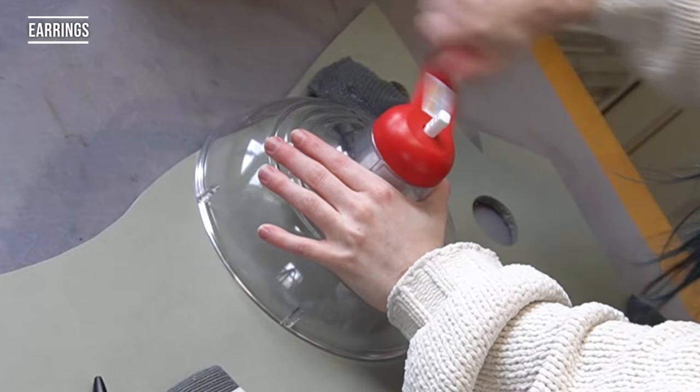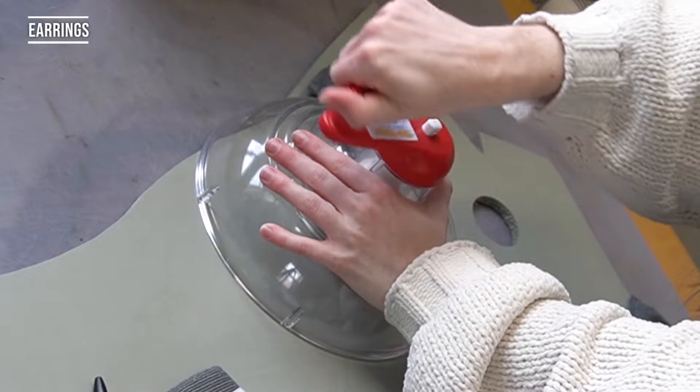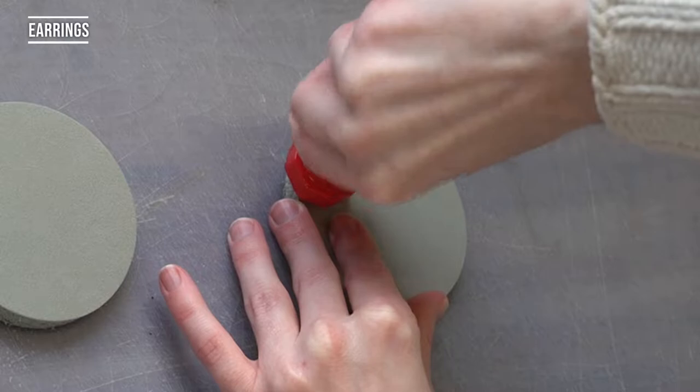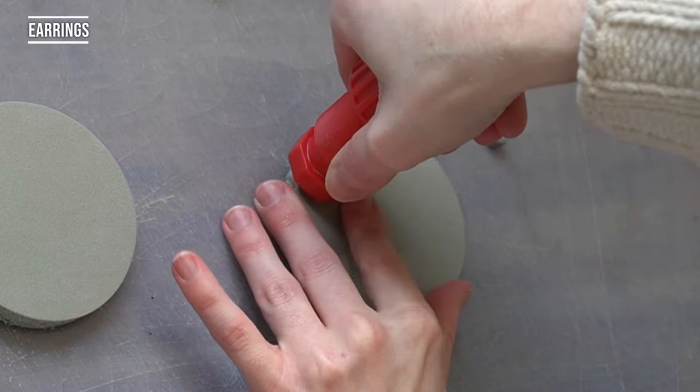First, starting off with making the earrings. For this you're going to need Costool's circle cutter as well as 10mm EVA foam, and you're going to cut out two circles. Then you're going to get Costool's hole drills, their smallest size, and you're going to use this to make a hole at the very top part a little bit away from the edge. This will be what your ear hook will go through.